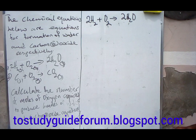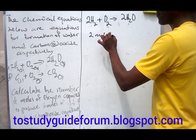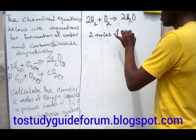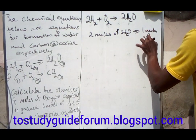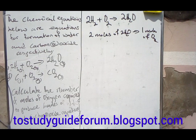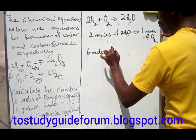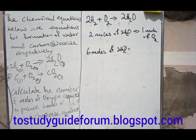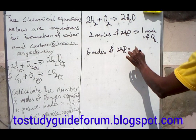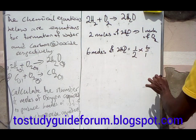Looking at this equation, we find that from two moles of water, we require one mole of oxygen. So to produce six moles of water, what we do is calculate one over two times six over one.